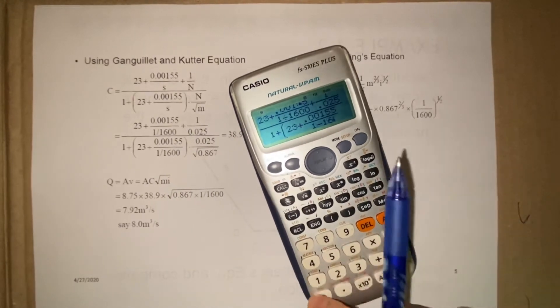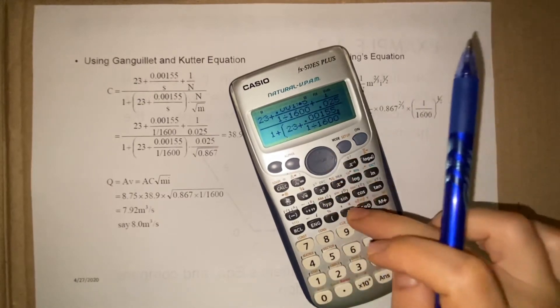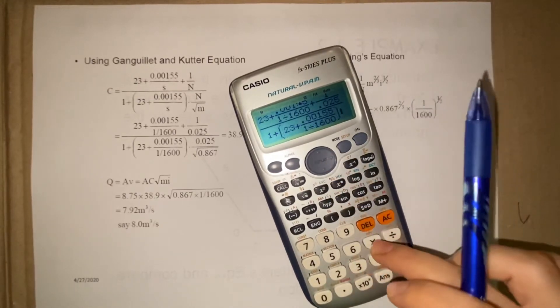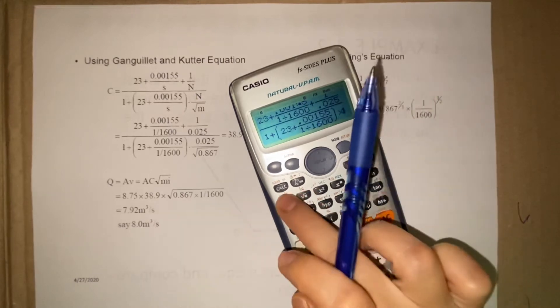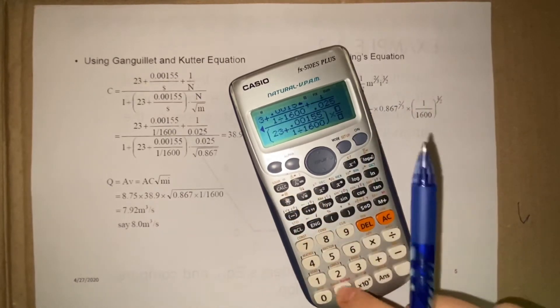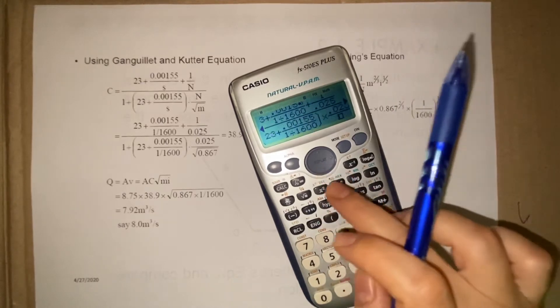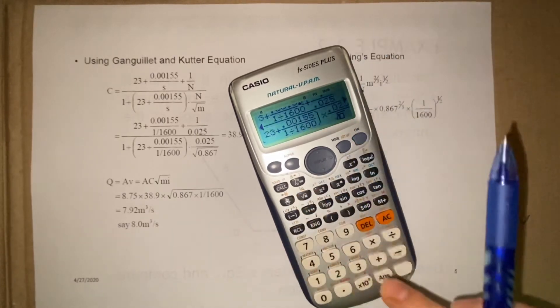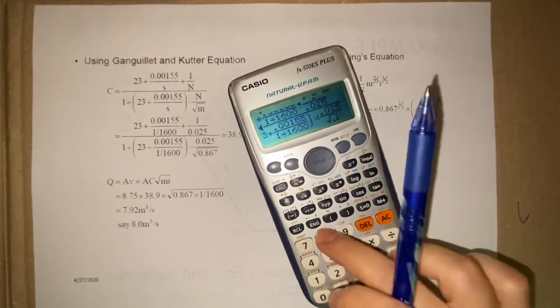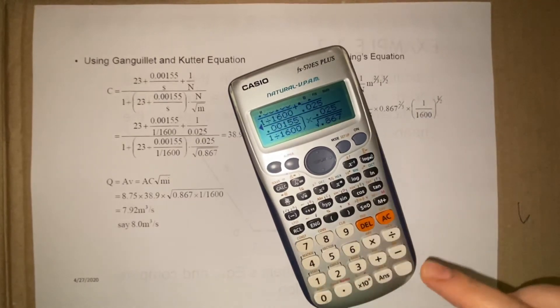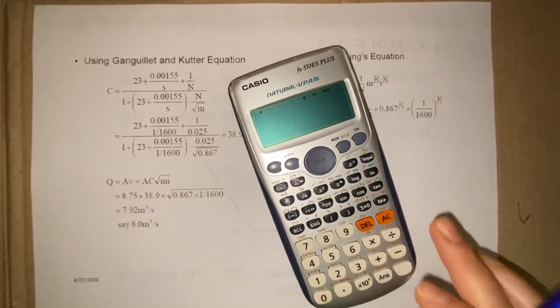Times N, 0.00155 times 0.025 over M, we have calculated from the previous example, 0.867. Okay, then answer is 38.88 or 38.9.